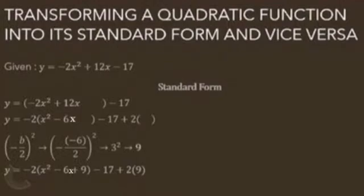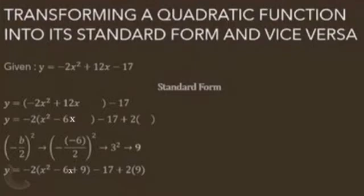Since the value of a is negative 2, then the other side should be positive 2. To avoid confusion before moving to the next slide, the final form as of now is y equals negative 2 open parenthesis x squared minus 6x plus 9 close parenthesis minus 17 plus 2 times 9.